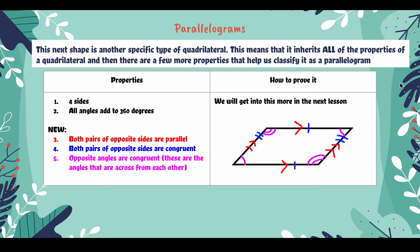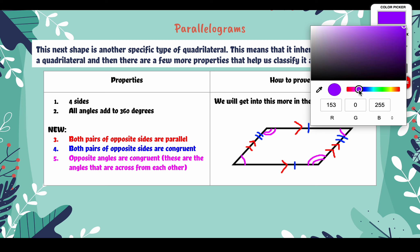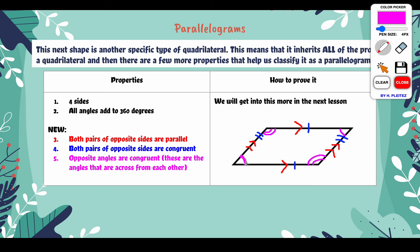The next property is that both pairs of opposite sides are congruent. The third new property is that opposite angles are congruent — these are the angles across from one another. This angle and this angle with the singular arcs are across from one another, so if we have a parallelogram we know those are congruent. The same goes for the other pair of opposite angles — if we have a parallelogram, those two are congruent as well.